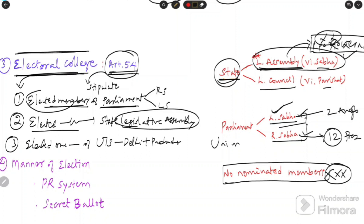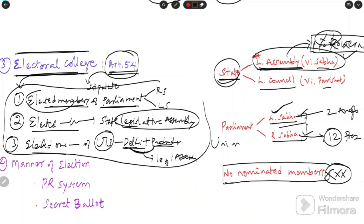The nominated member appointed by the governor is not involved in the presidential election. Third, the Electoral College also includes elected members of the Legislative Assemblies of the Union Territories of Delhi and Puducherry. Only these two union territories are included because they have legislative assemblies. Other union territories like Daman and Diu or Lakshadweep are small and are directly administered by the central government, so they are not included.